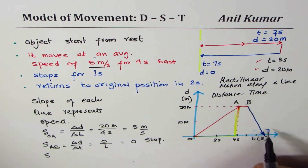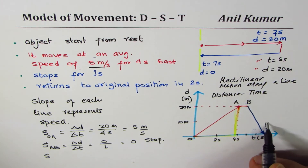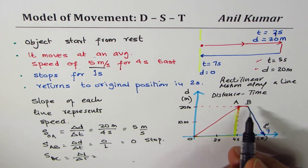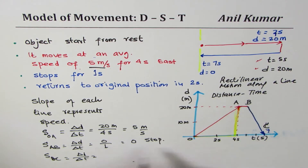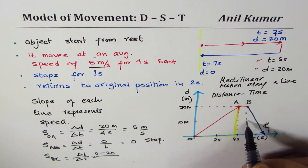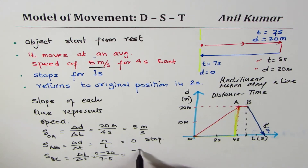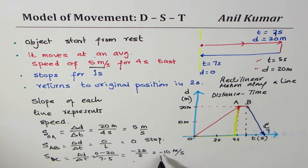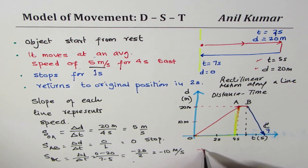For the segment B to C, the change in distance over change in time is zero minus twenty, divided by seven minus five, which is minus twenty over two, giving minus ten meters per second. It's a very high speed at which the object returns. The negative sign means distance is decreasing — we can interpret this as the return journey.